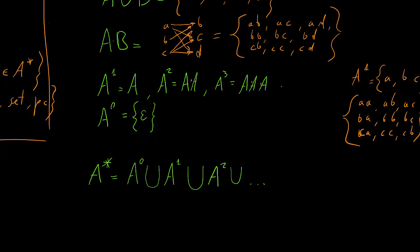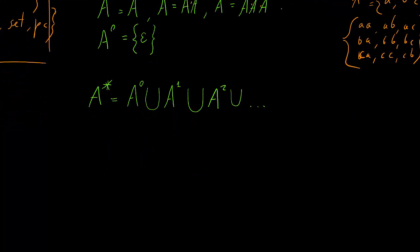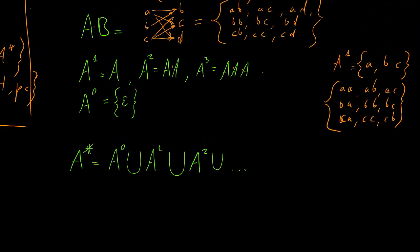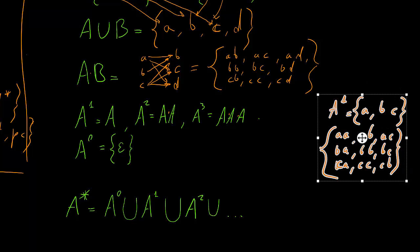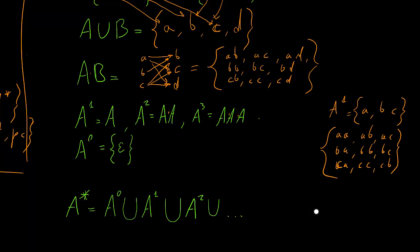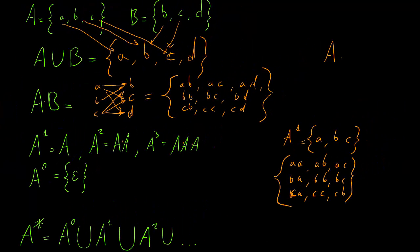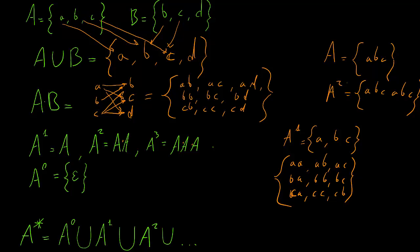Now that we saw this exponentiation shorthand, we can define the Kleene star of a set. Just to be clear, exponentiation works with whatever — if A contains strings, A to the 2nd will be concatenations of pairs of those strings. So you're just creating concatenations of two elements from A, whatever those elements are — they could be symbols if A is an alphabet, or strings if it's a language.